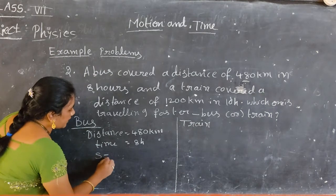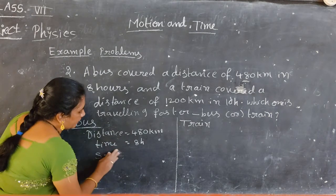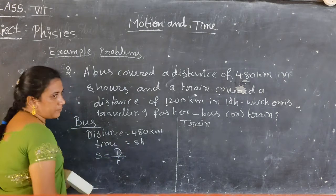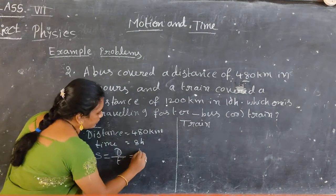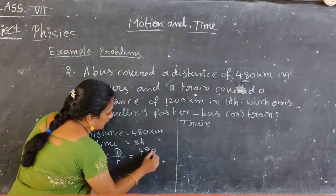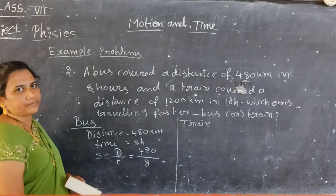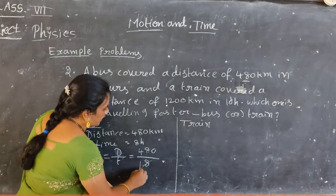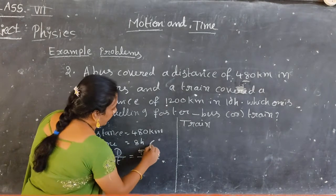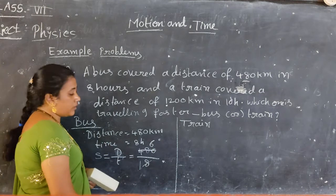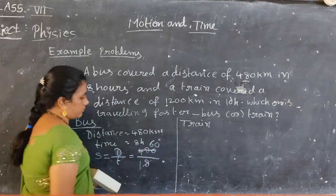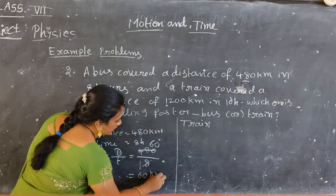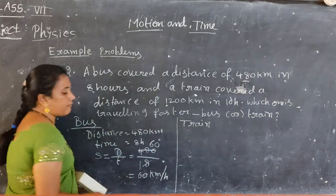Speed of the bus is equal to distance by time, that is 480 kilometers divided by 8 hours. We will get the answer 60 kilometers per hour.